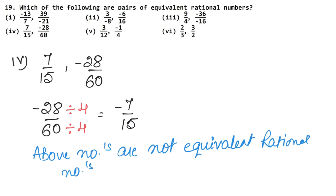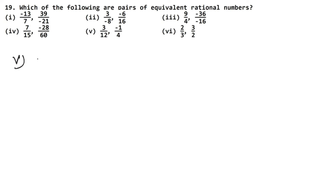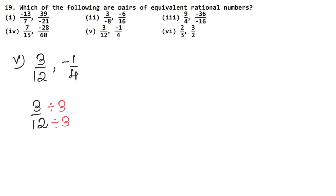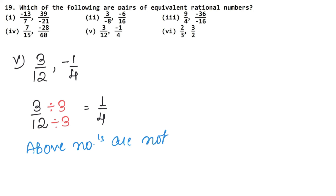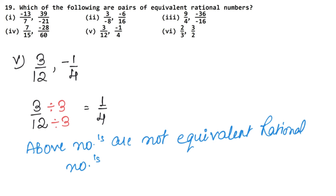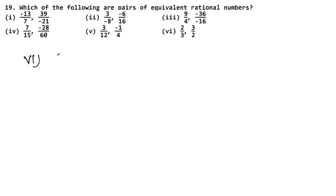The next part is 3 upon 12 and minus 1 upon 4. If we simplify 3 upon 12 by dividing both by 3, we get 1 upon 4 — which is positive, while minus 1 upon 4 is negative. The above numbers are not equivalent rational numbers.